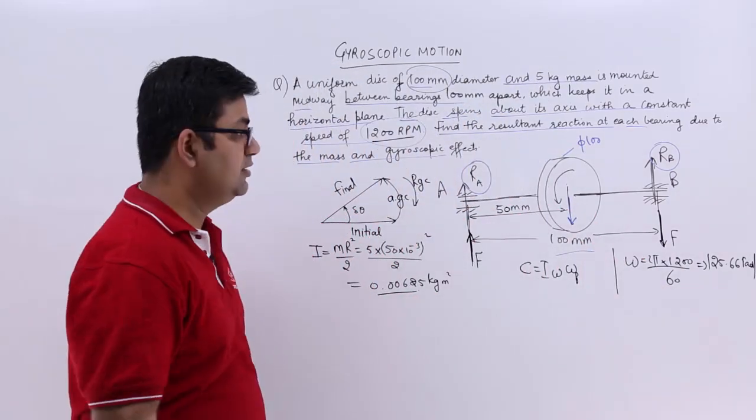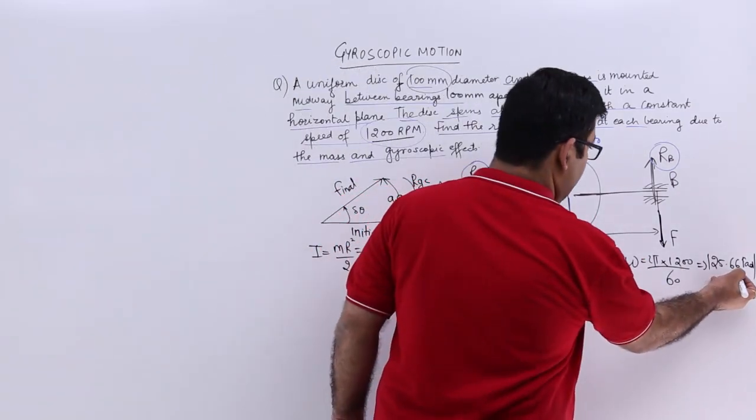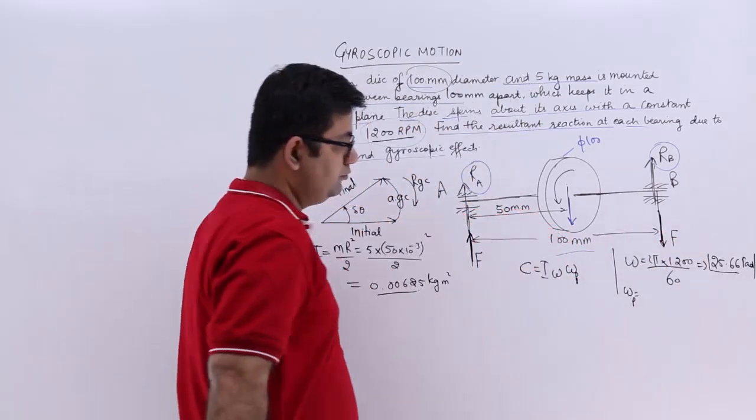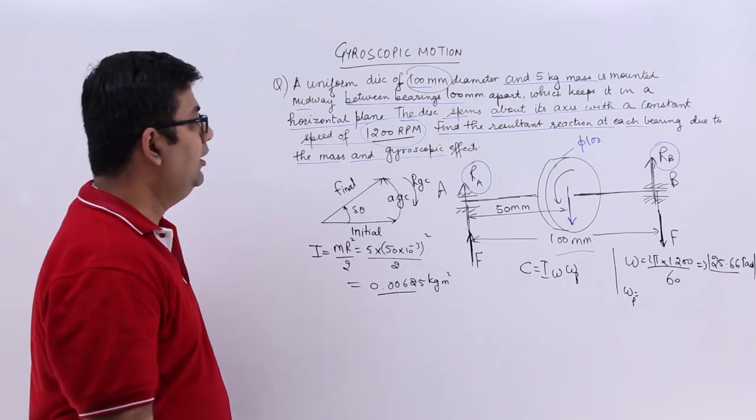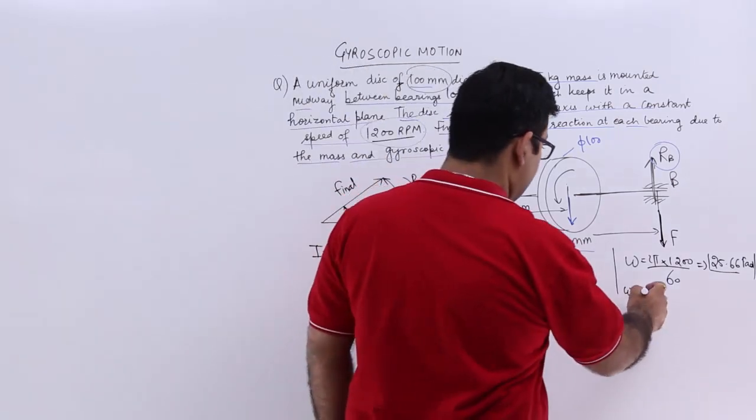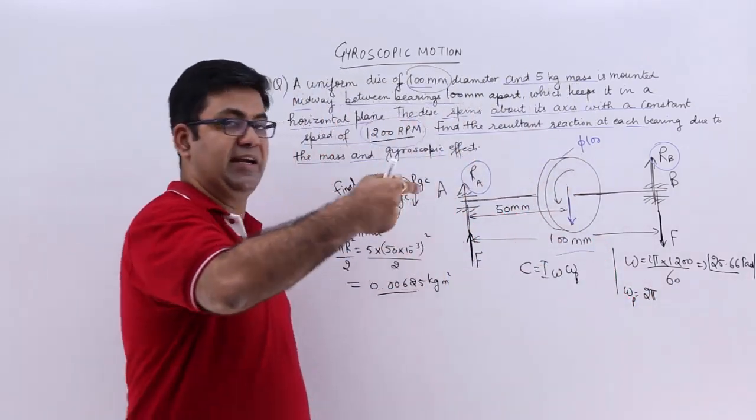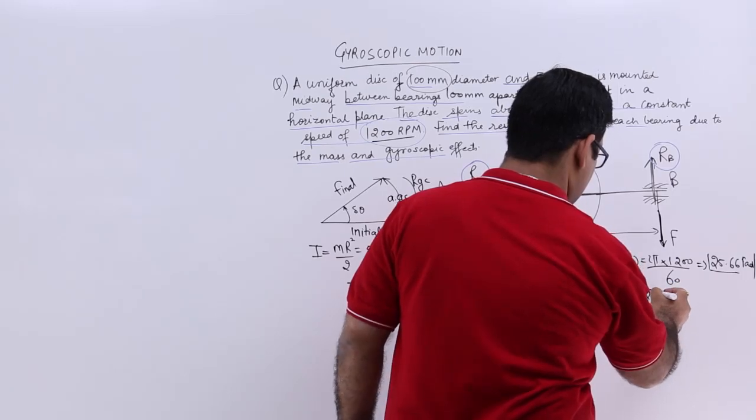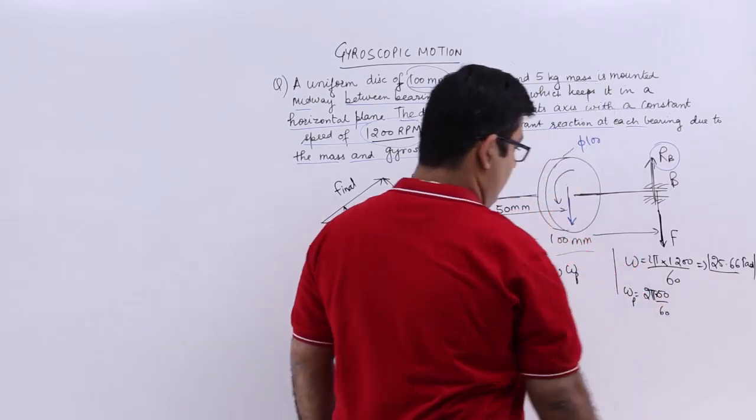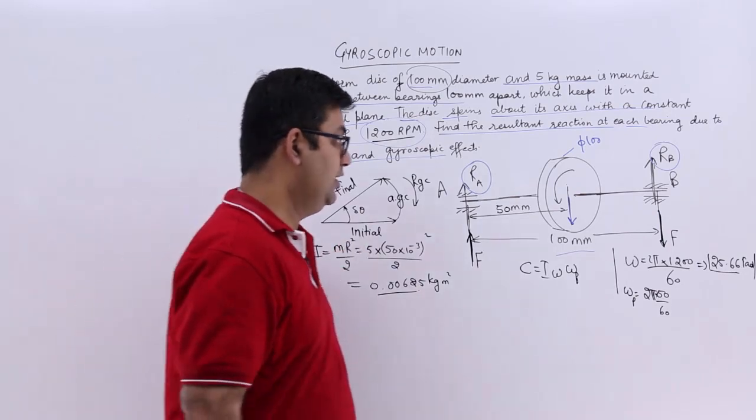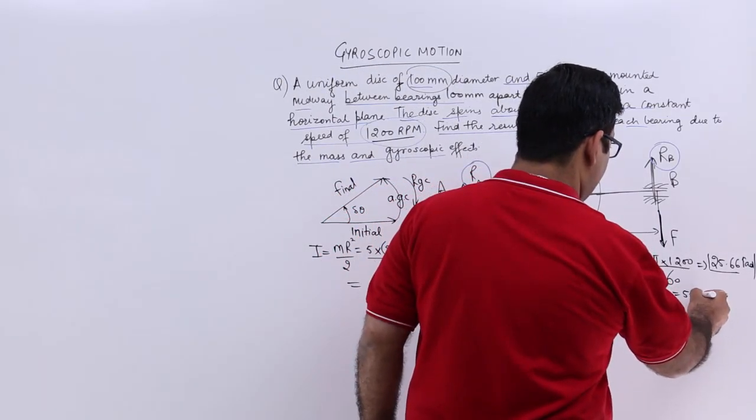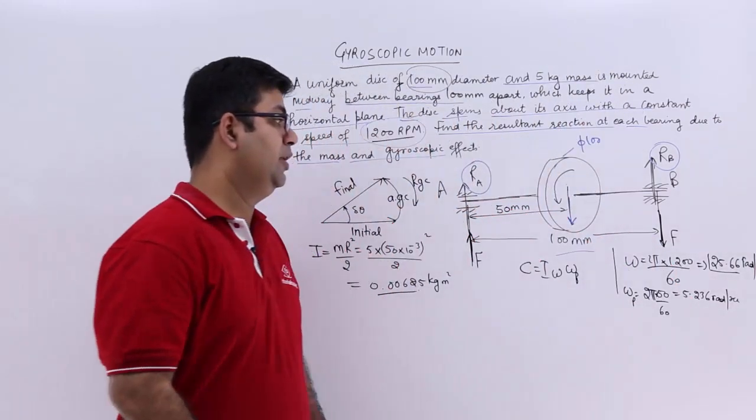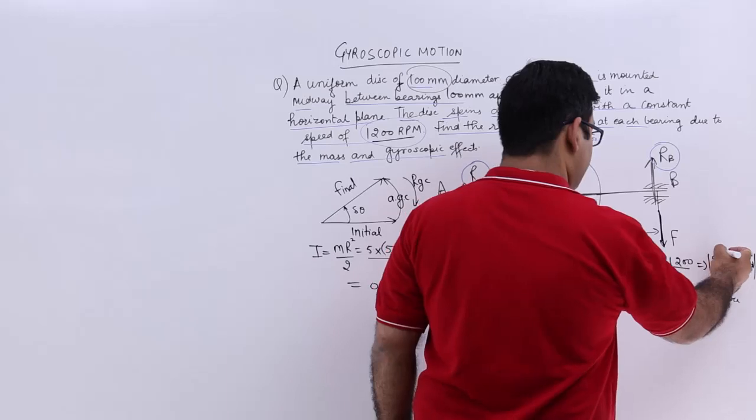Now let's find out omega_p. Omega_p would be 2π × R / 60, where R is 50 millimeters. That is your omega_p. This would come out to be 5.236 radians per second.